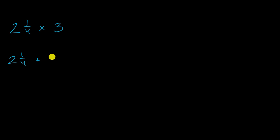two and one-fourth plus two and one-fourth plus two and one-fourth. Now I could also view this as each of these two and one-fourths is two plus one-fourth plus two plus one-fourth plus two plus one-fourth.